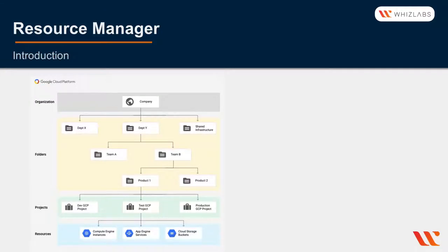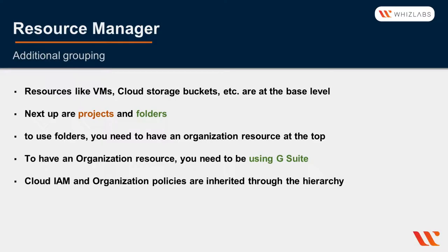As you can see in this diagram, there is an organization at the top, then folders, projects, and resources. Resources like VMs, cloud storage buckets, etc., are at the base level. Next up are projects and folders. If you want to use folders, you need to have an organization resource at the top.